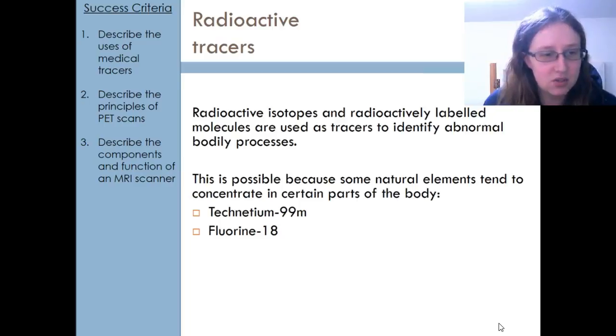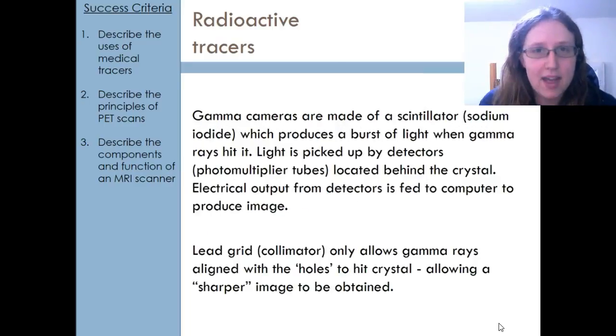Now, in order to detect where these radioactive materials are, we need to have a means of detecting the radiation given off. So what we use are gamma cameras. These are cameras that detect the gamma rays that are emitted by these radioactive tracers.